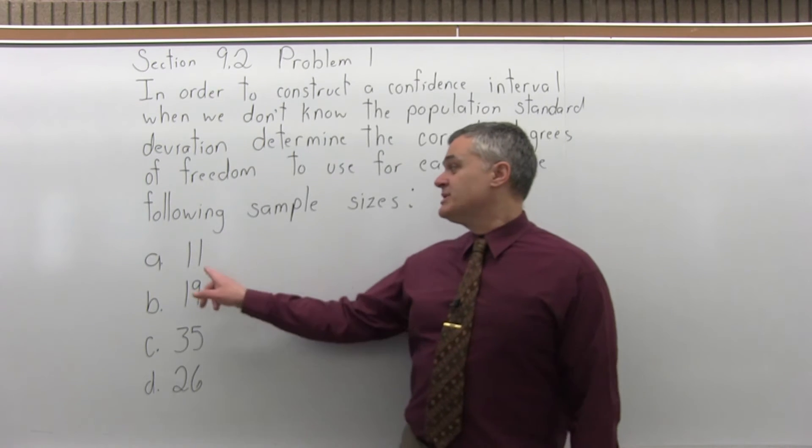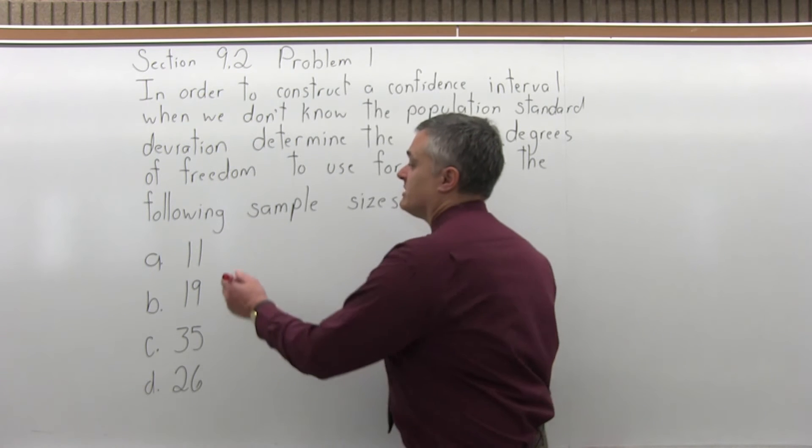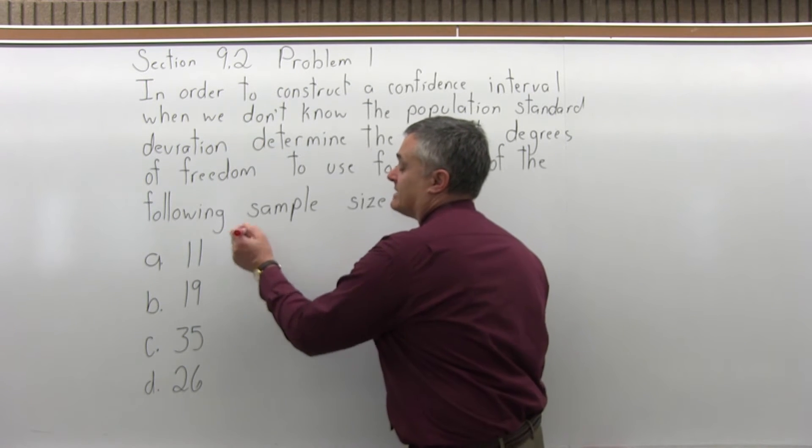Part A, if the sample size is 11, the number of degrees of freedom would be one less. It would be 10.